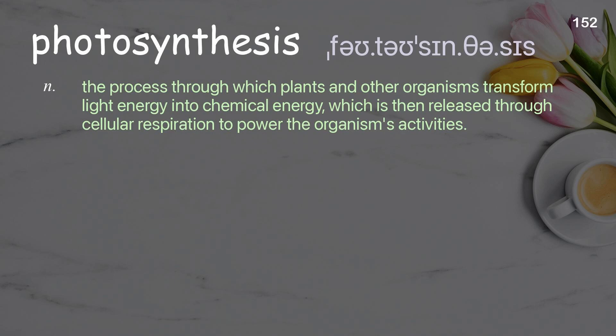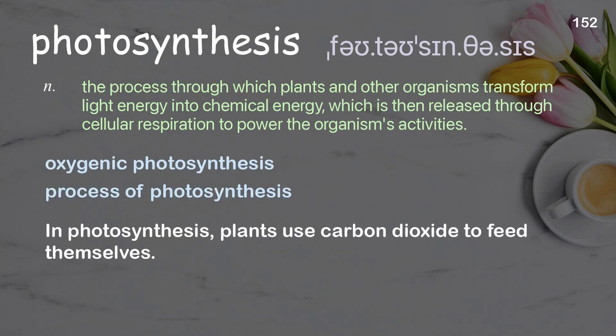Photosynthesis: the process through which plants and other organisms transform light energy into chemical energy, which is then released through cellular respiration to power the organism's activities. Examples: oxygenic photosynthesis, process of photosynthesis. In photosynthesis, plants use carbon dioxide to feed themselves.